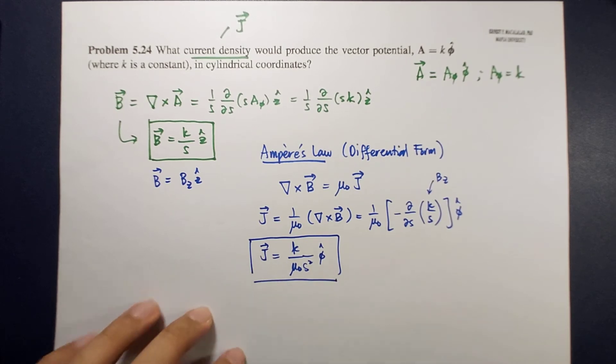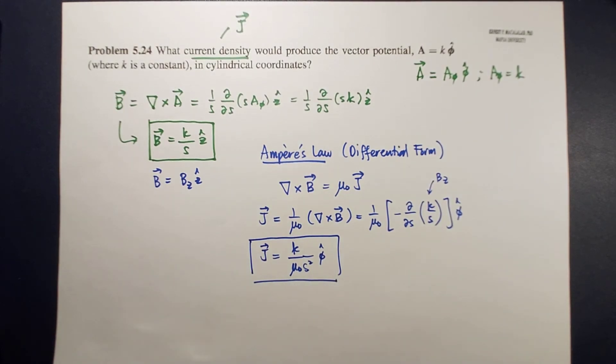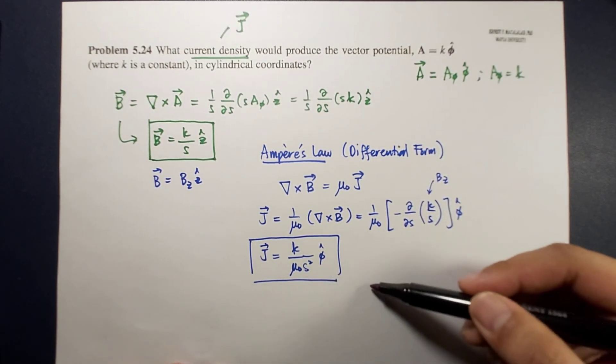This is now the direction of the, and this is now your current density: k over mu naught s squared phi hat. So the direction is phi hat.